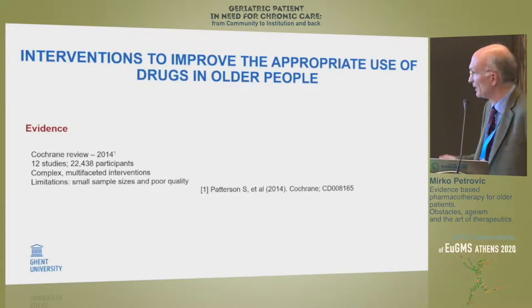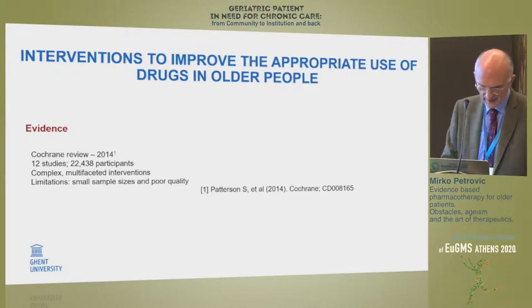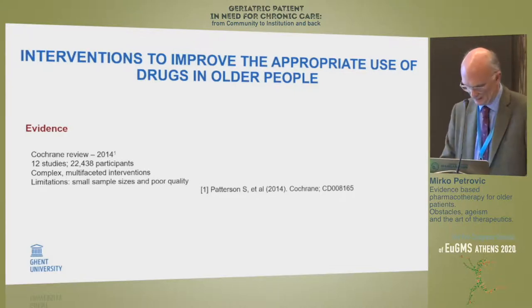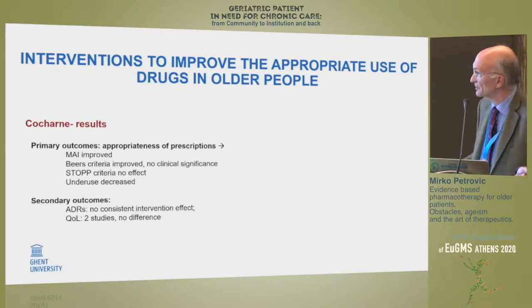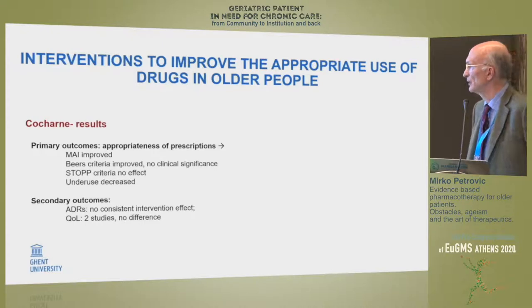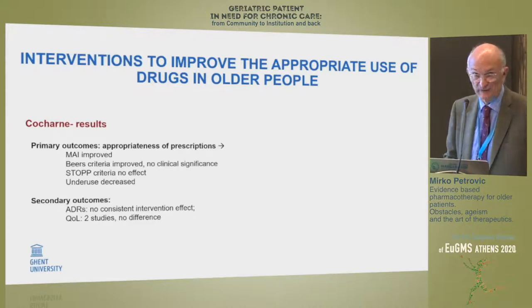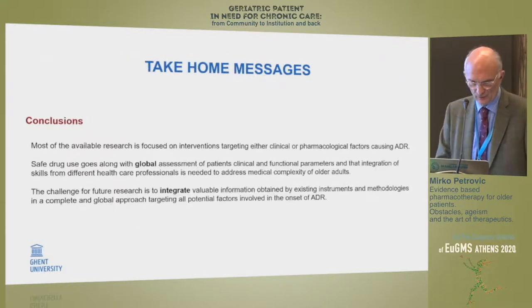There has been a Cochrane review from Patterson and colleagues with a large group of participants — more than 20,000 — including 12 studies, all addressing complex multi-step and multifaceted interventions in older people. The results are to a certain level encouraging: the quality of prescribing improves. However, with regard to quality of life and the prevalence or incidence of adverse reactions, the results were not so satisfactory.